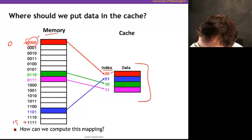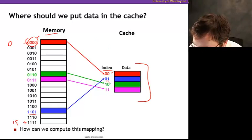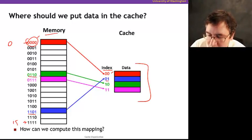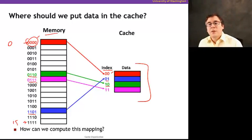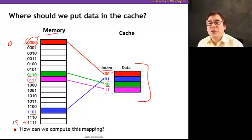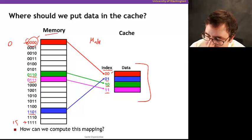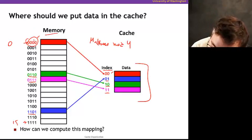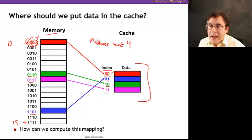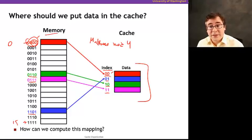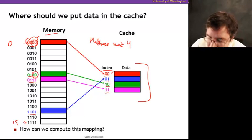One way to do that is to use the address and compute the index — the location in the cache where the data goes. For example, address 0 goes to index 0; address 1101 goes to index 1; address 1010 goes to index 10; and address 0111 goes to index 11. If you notice, this is just modular arithmetic: take the memory address, do mod 4, which is the same as taking the two low-order bits of the address and using that to index the cache.